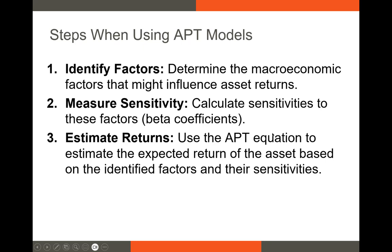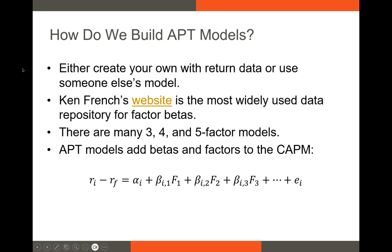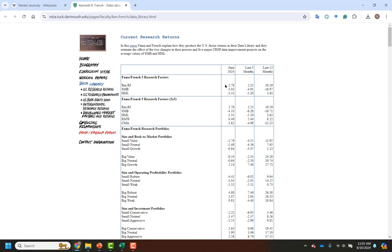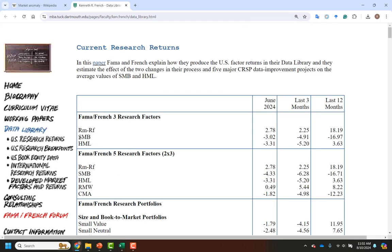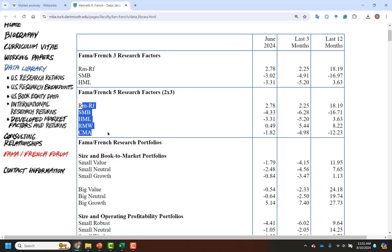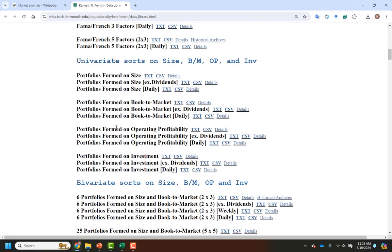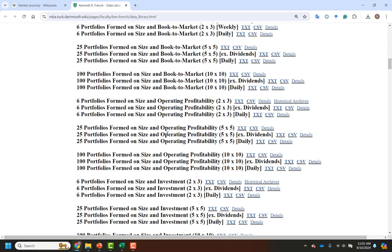We have some idea of anomalies that predict stock returns, and someone will have built factors based on those anomalous variables. They'll run a regression using some data and calculate the beta associated with those variables, then provide those betas to everyone. In my last video, I talked about Ken French's website, which puts out betas with respect to things like the market risk premium and other factors like the SMB and HML factors — the five-factor model. If you're looking for factor betas, this is the easiest place to find those without calculating them yourself.